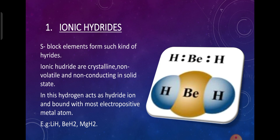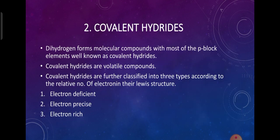Ionic hydrides are also known as saline hydrides or salt-like hydrides. They are called saline hydrides because they have a structure similar to NaCl and their packing shows similarities with NaCl packing. Ionic hydrides are crystalline, non-volatile, and non-conducting in solid state. In these, hydrogen acts as the hydride ion and is bonded with a highly electropositive metal atom. They are usually binary compounds and are insoluble in common solvents. Examples include lithium hydride, beryllium hydride, and magnesium hydride.